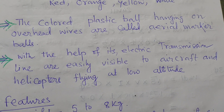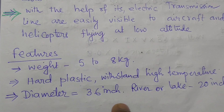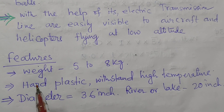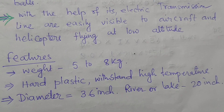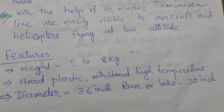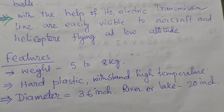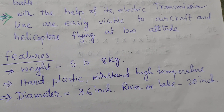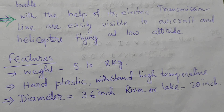If someone asks what aerial marker balls are, the simple answer is: they are colored plastic balls hanging on the overhead wires, called aerial marker balls, with the help of which electric transmission lines are easily visible to aircraft and helicopters flying at low altitudes. The weight of the aerial ball is 5 to 8 kg, made of hard plastic, and can withstand high temperatures. The diameter of this ball is 36 inches; in river or lake crossings they may be 20 inches — so from 20 to 36 inches.